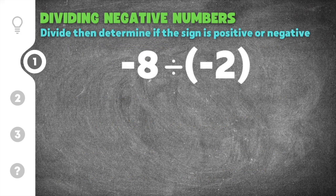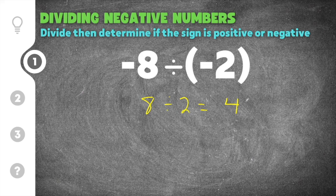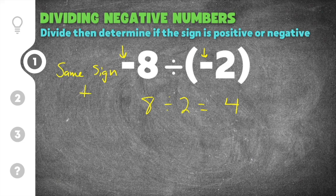Let's get started on our first practice problem on dividing negative numbers. This first problem gives us negative eight divided by negative two. We're going to divide these by ignoring the signs first, so we say eight divided by two, which is four. To figure out if this four is positive or negative, we look at the signs of the numbers in the problem. Both numbers are negative, which means they have the same sign, so the answer is going to be positive four.